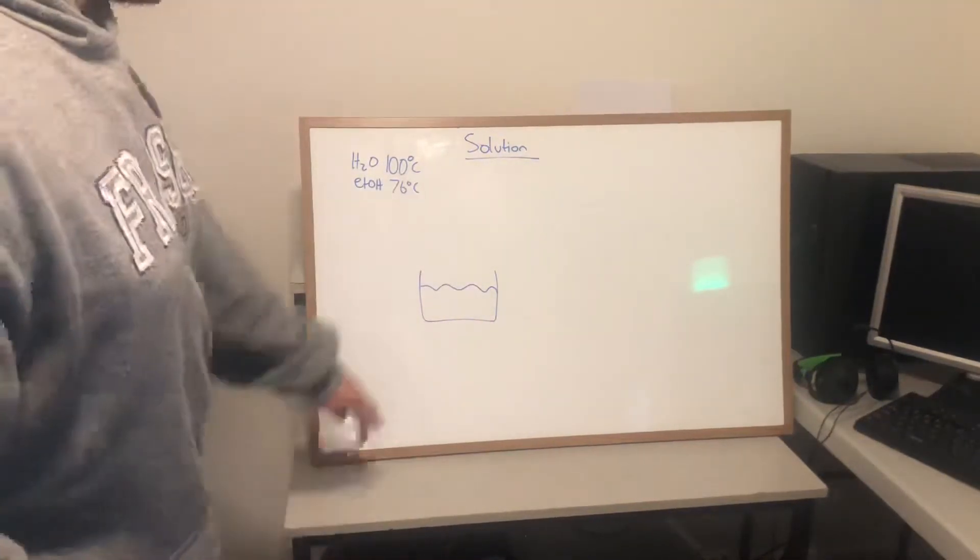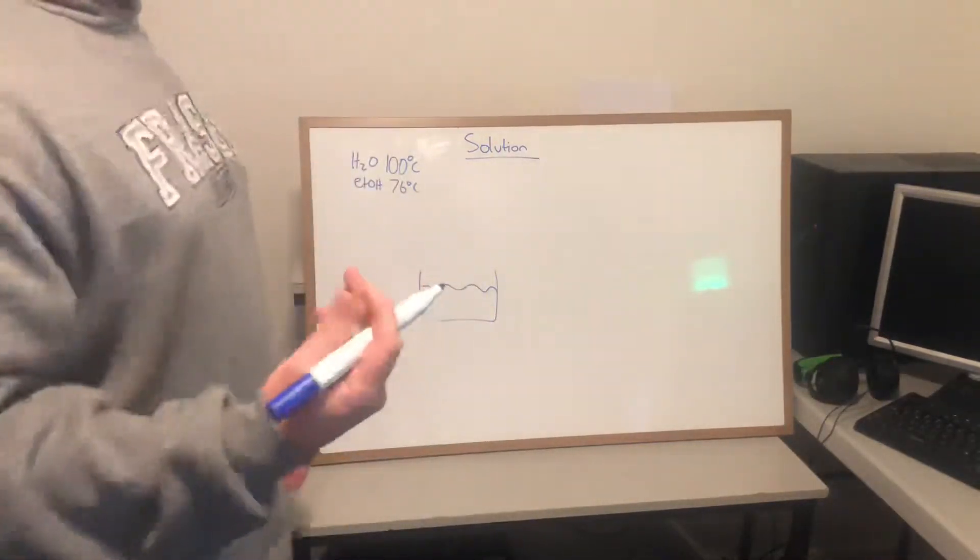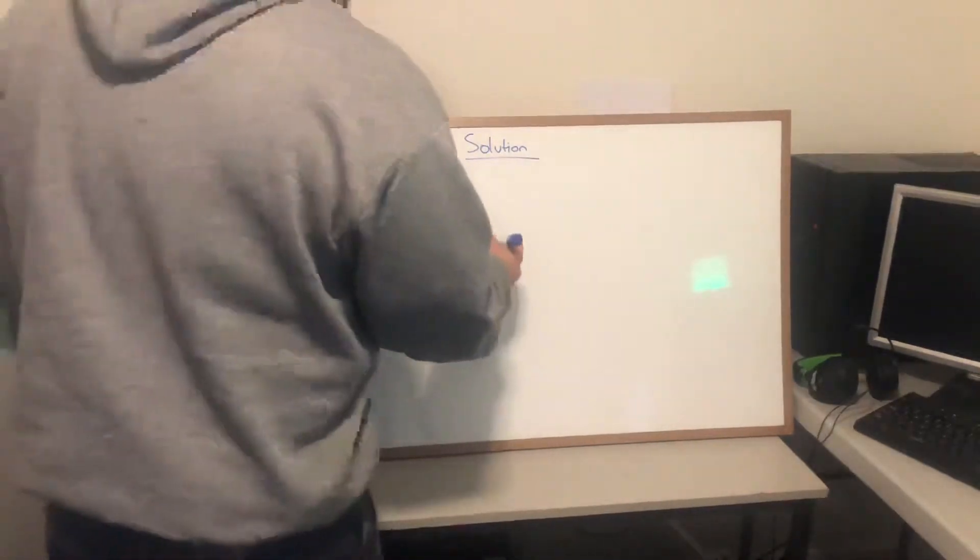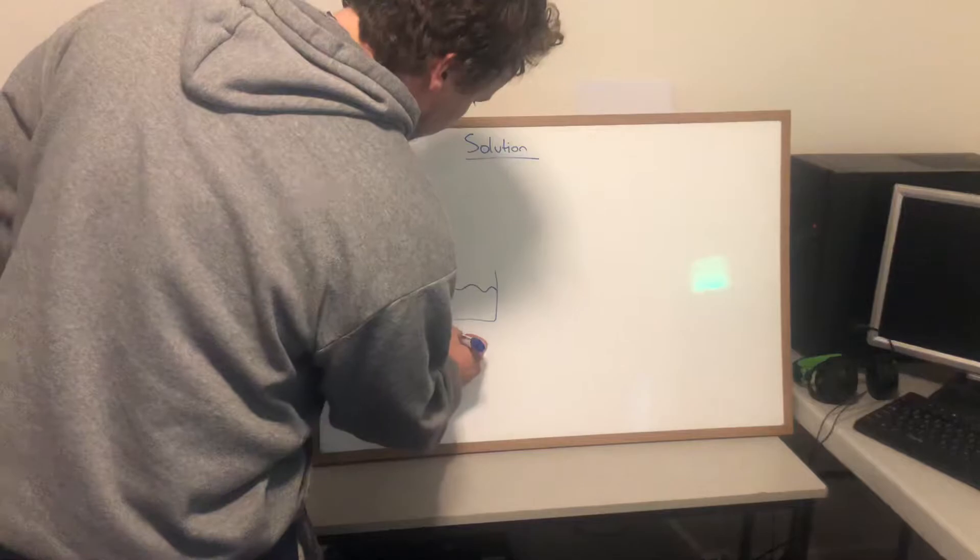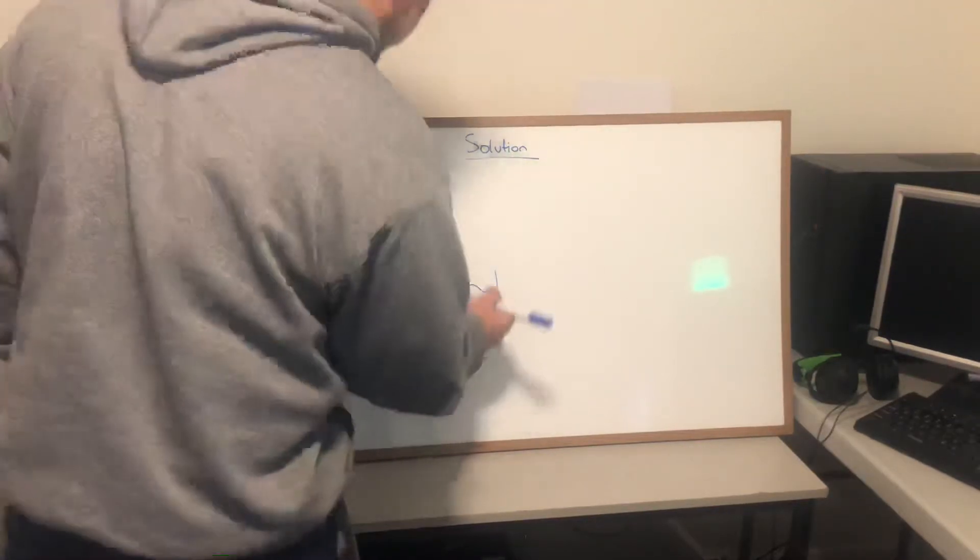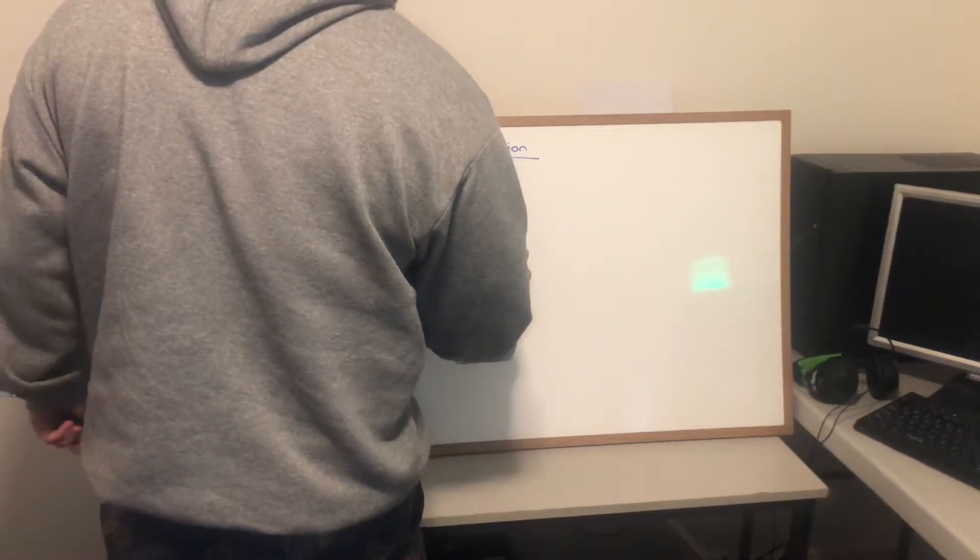So here, we want to get rid of the ethanol out of the water, or the water out of the ethanol depending on what you're doing. So we need to... This is a Bunsen burner, or a candle. And what we do is we put a flask like this.